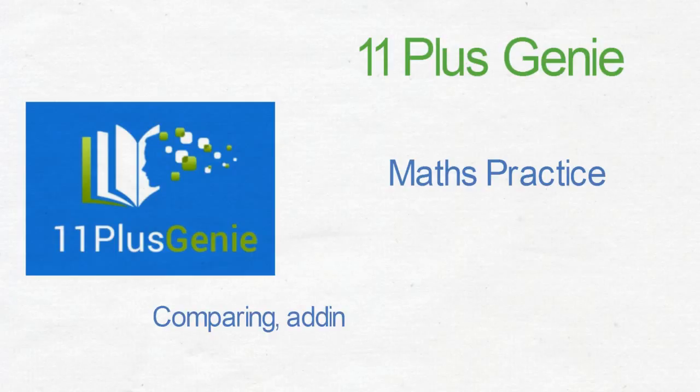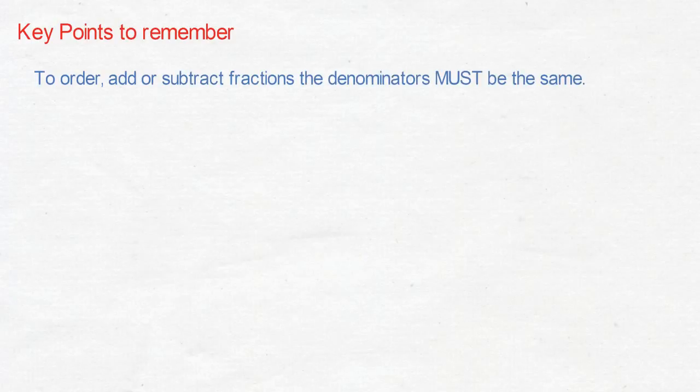Comparing, adding and subtracting fractions. Key points to remember: To order, add or subtract fractions, the denominators must be the same. Always try to make the smaller denominator the same as the larger denominator.